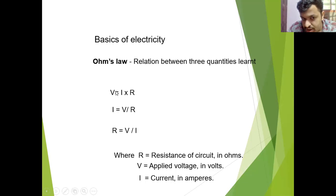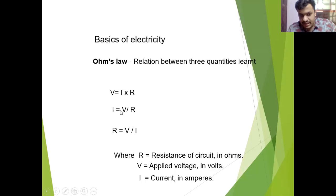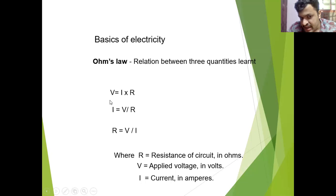What is Ohm's law? There is an equation: voltage is equal to I into R, that means voltage equals current into resistance. From here we can write I equal to V by R — we place I on the left side and bring R to the right, so it becomes division. Another equation is R equal to V by I.